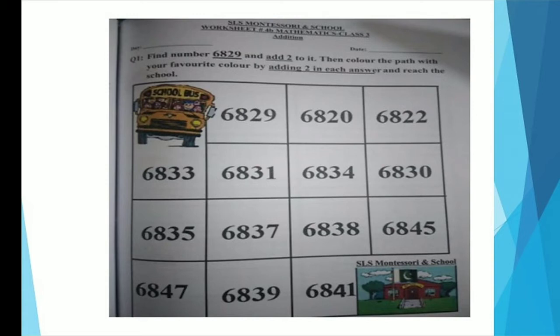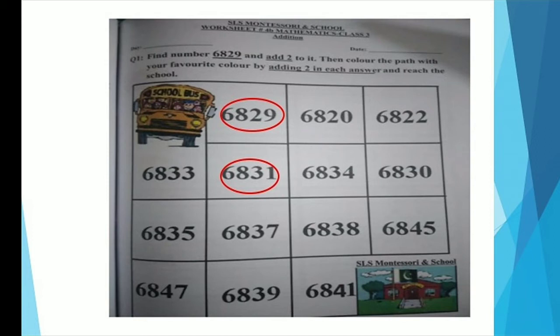Now we will find the path. The number given in your question is 6829, and we have to add 2 in it. If we add 2 in 6829, what will be the answer? Think about it. Yes, it will be 6831. Now add 2 in this number — yes, it will be 6833.